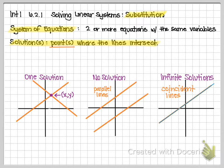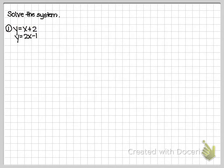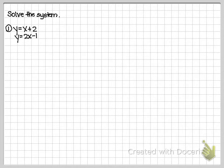Substitution can be done a couple of different ways. We're going to do the first one today — it's kind of an entry-level way to do it. I want you to inspect these equations and look at something very specific about both of them; this is going to be true for every single system you do today. Look at the first equation — you will notice that the Y variable is isolated. What I mean is that the equation has Y all by itself on one side of the equal sign. Take a look at the second equation — it is also in the same format; the Y is isolated.